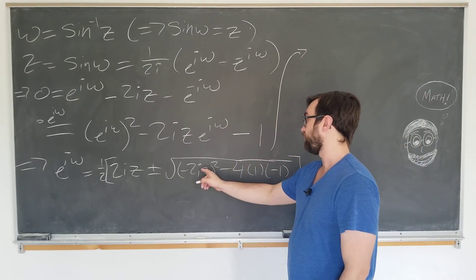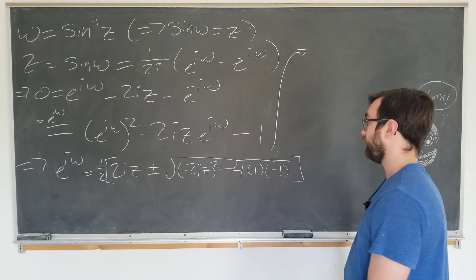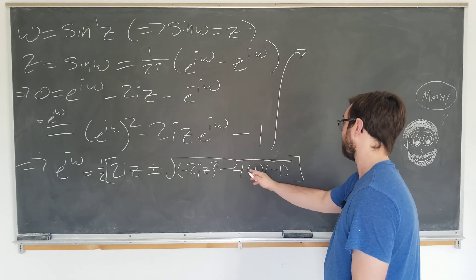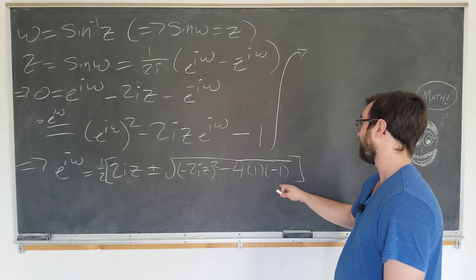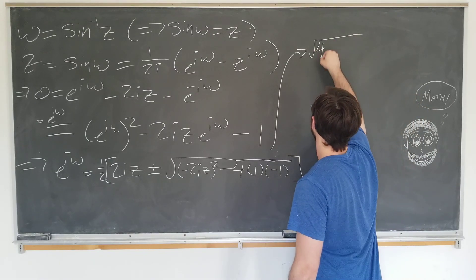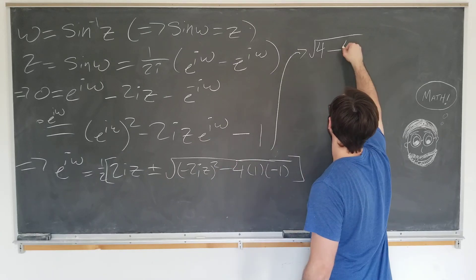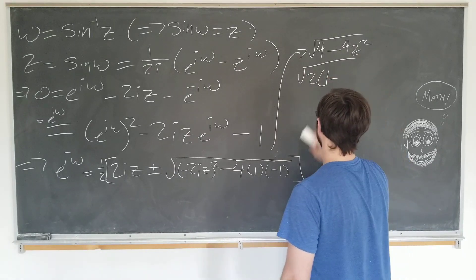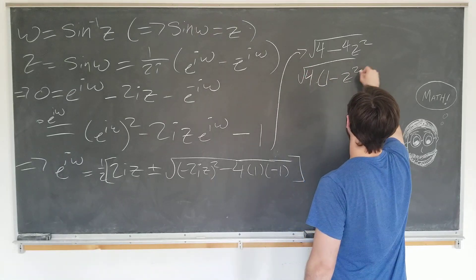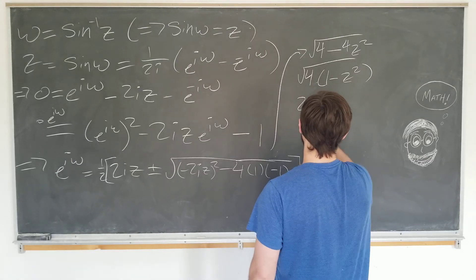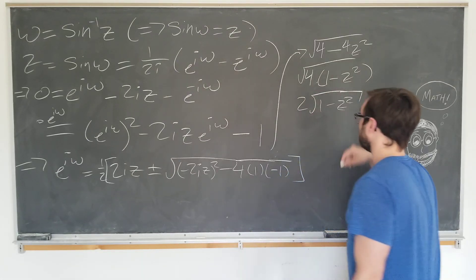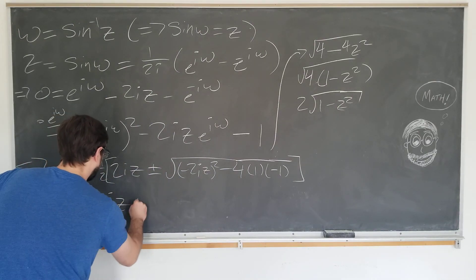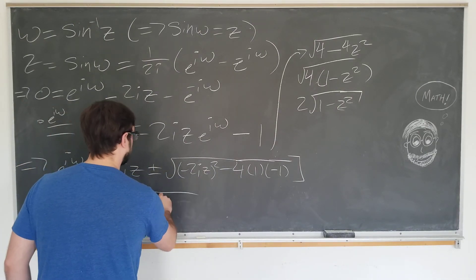So we have i squared is negative 1. This negative sign becomes a 1 as well when you square it. So this thing is going to be negative. We're going to have minus 4 times minus 1, which is plus 4. So we have a square root of 4 minus 4z squared, which we can obviously write as 2 times the square root of 1 minus z squared. And we see that when we hit this with the 1 half, it goes away, becoming nice.